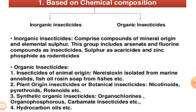Classification of insecticides according to chemical composition includes three classes: inorganic insecticides, naturally occurring organic insecticides of plant origin, and synthetic organic insecticides.